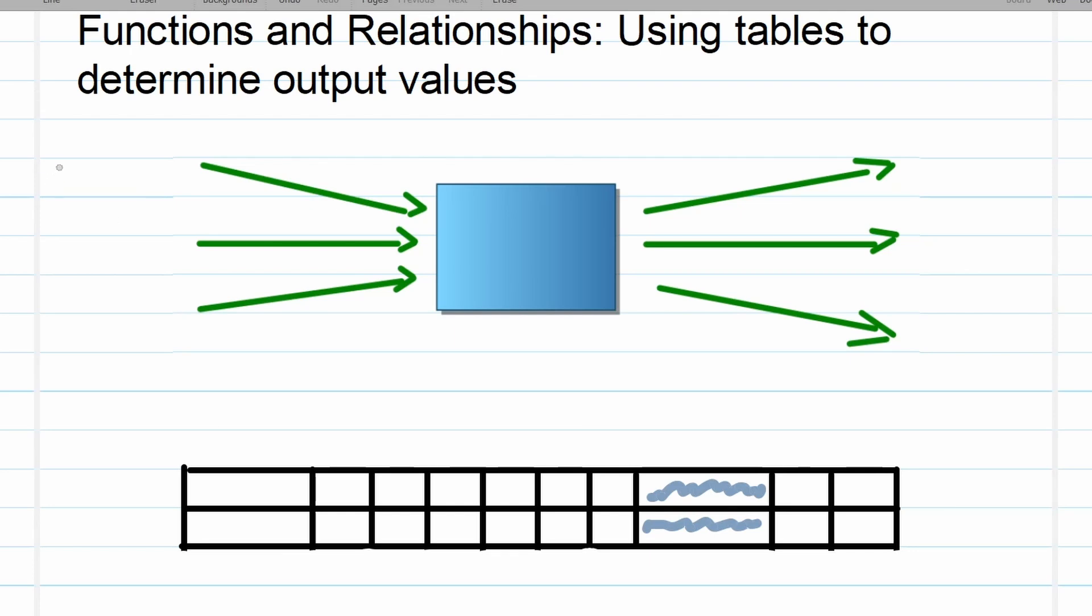Just a quick recap. Remember from our previous video we have our flow diagrams and we have our input values. This is the value you choose to put in the place of a variable inside the rule, for example 3x minus 5. Once this calculation is complete, you have an output value.